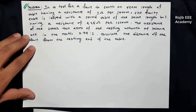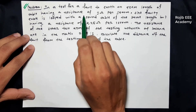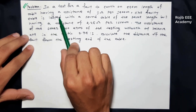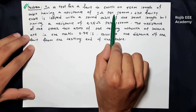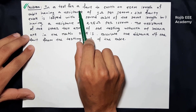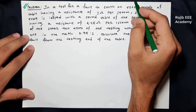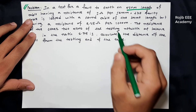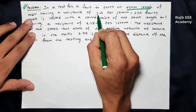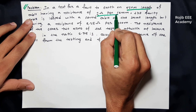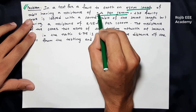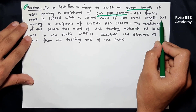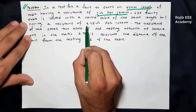If we have three loops, we will solve the problem. In a test for a fault to earth on a 500 meter length of cable having a resistance of 1 ohm per 1000 meter. So we have a length of 500 meters of a cable having a resistance of 1 ohm per 1000 meter. For 1000 meter, we have a resistance of 1 ohm.